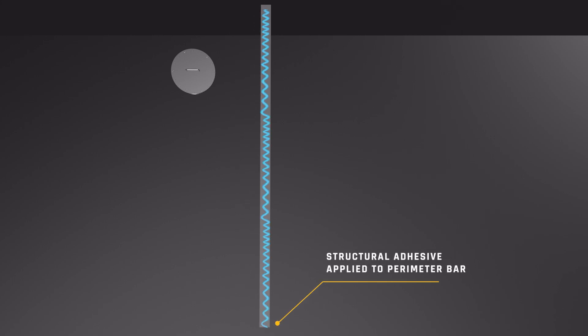Once the blasting is complete, structural adhesive is applied to the underside of a pre-drilled and threaded perimeter bar and positioned on the deck.